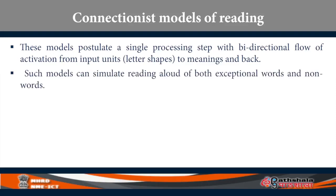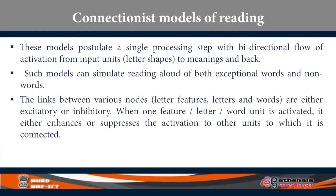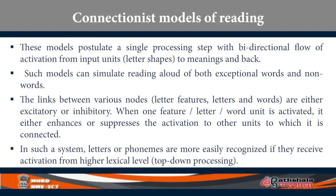Such models can simulate reading aloud of both exceptional words and non-words. In a connectionist system, nodes can represent letter features, full letters, or words. These various nodes are either excitatory or inhibitory — when one feature, letter, or word unit is activated, it either enhances or suppresses activation of other units, so you identify the intended correct word. In such a system, letters or phonemes are more easily recognized if they receive top-down information from contextual context, because there is bidirectional flow. Some connectionist models say reading also draws on world knowledge, and you do not have to assemble all features of letters individually to identify them.